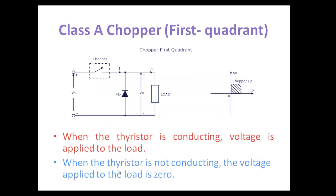Let us see the class A chopper in detail. This is the basic configuration of class A chopper, which has one switch and a freewheeling diode connected to a load. The class A chopper comes under the category of step-down chopper.